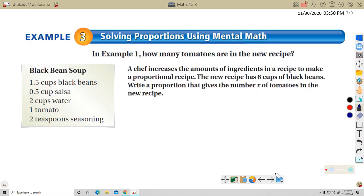Example three, solving proportions using mental math. Okay, so this one's kind of the same here. A chef increases the amount of ingredients in a recipe to make a proportional recipe. Again, six cups of black beans. And so this is kind of the same. This is the same question as the first one, right? So six cups of black beans to one tomato. And that's going to be equal to X tomatoes. Oops, I'm sorry, I did this wrong. I don't want to start the video again. The original recipe had 1.5 and the new recipe had 6. I'm sorry.